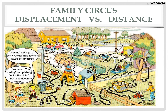This is a Family Circus cartoon, usually published in the Sunday newspaper. You can see Billy started on the steps and traveled all the way around — through the trash can, the teepee, over the car, across the street, through the woods, through the neighbor's yard, and ended up back near where he started. His displacement — the distance between his final and initial position — is very small, while the distance he actually traveled is really long. That's the difference between distance and displacement.